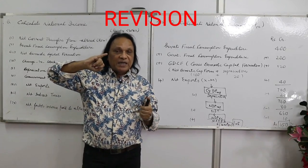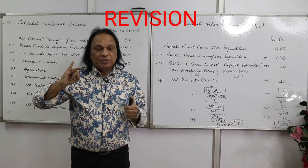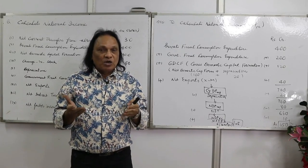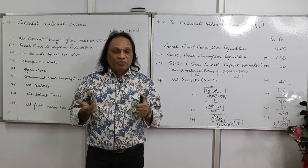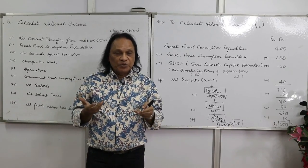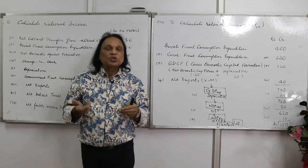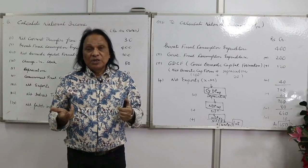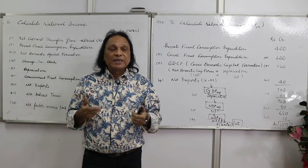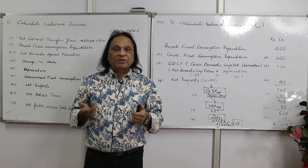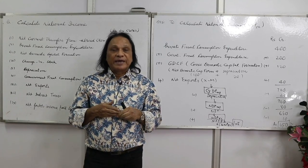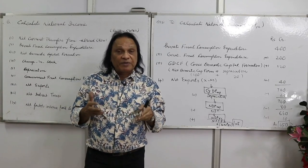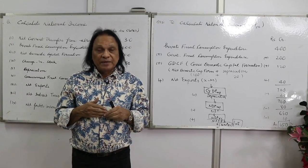I repeat once again the formula for the expenditure method. Memorize it, put the formula first, then pick up the values and you automatically get the answer. Private final consumption expenditure plus government final consumption expenditure plus gross domestic capital formation (gross domestic fixed capital formation plus change in stock) plus net exports (exports minus imports) gives GDP at MP. Subtract depreciation, then NIT to get NDP at factor cost (domestic income). Add NFIA to get NNP at factor cost.